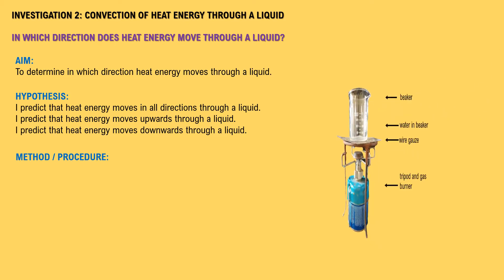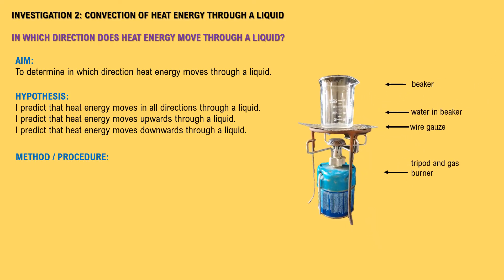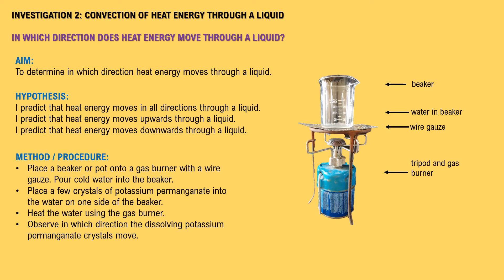You will need a beaker or pot, a gas burner, a tripod, wire gauze, potassium permanganate, and water. Place a beaker or pot onto a gas burner with a wire gauze. Pour cold water into the beaker. Place a few crystals of potassium permanganate into the water on one side of the beaker. Heat the water using the gas burner and observe in which direction the dissolving potassium permanganate crystals move.